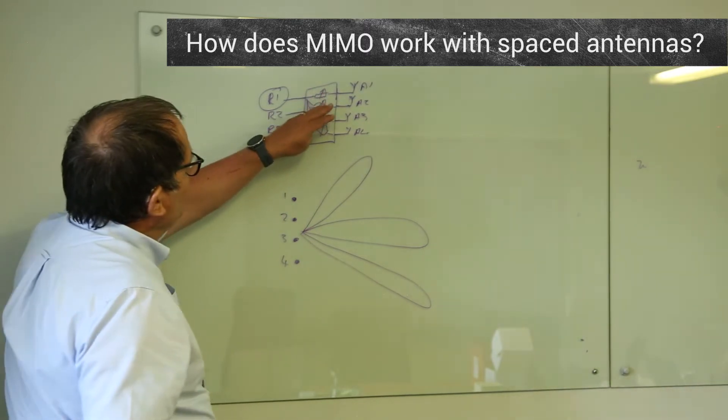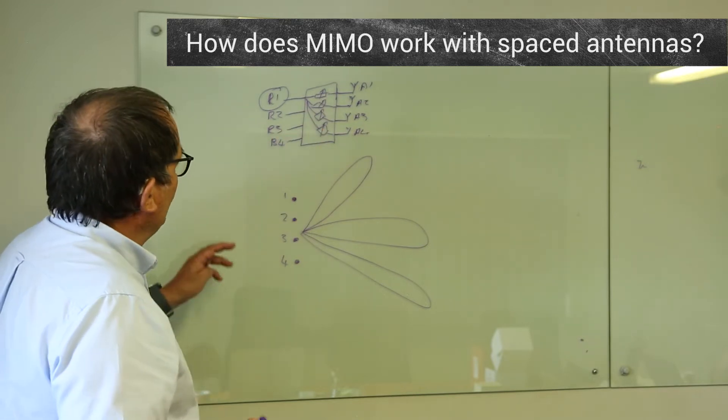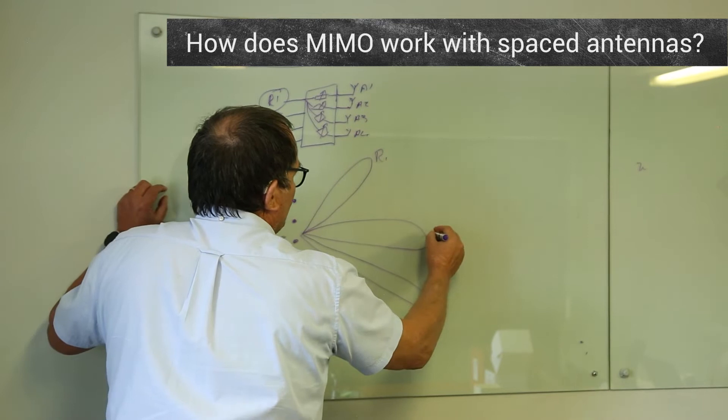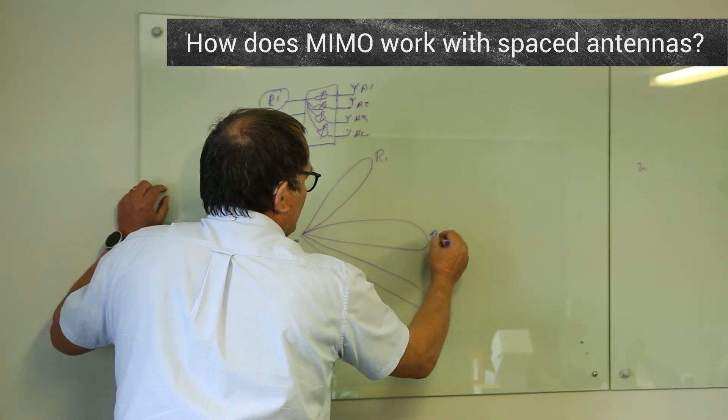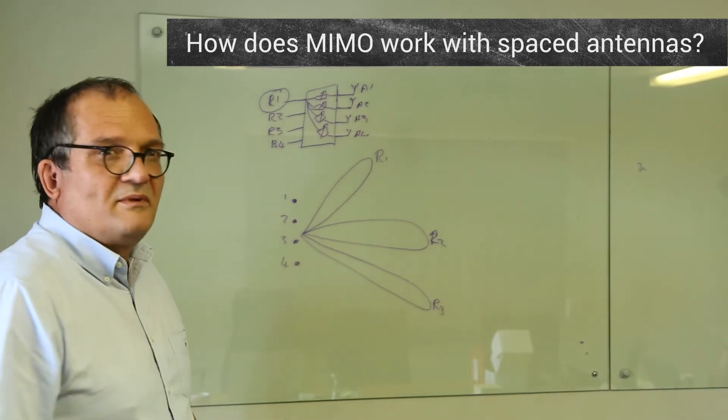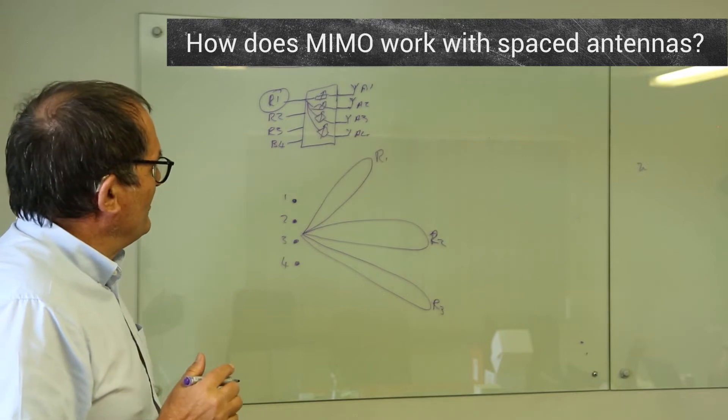So in other words, this magic box, remember it's got those same phase changes to each of these radios, can actually give radio 1 this beam, radio 2, and radio 3, and radio 4 perhaps. We can't find another beam that's useful for it. Bad luck. You're not going to get 4x4 MIMO.